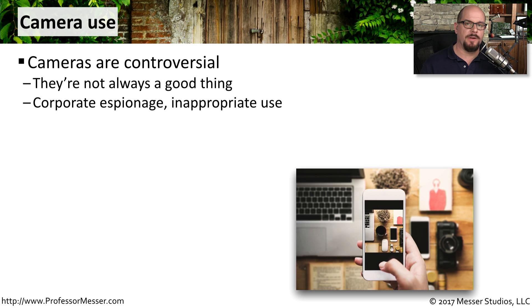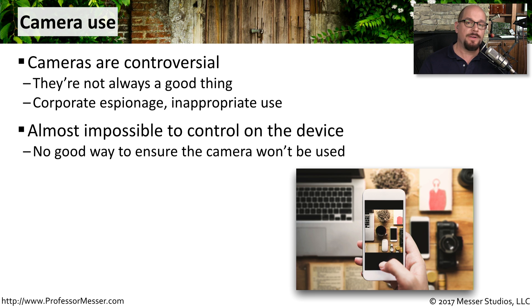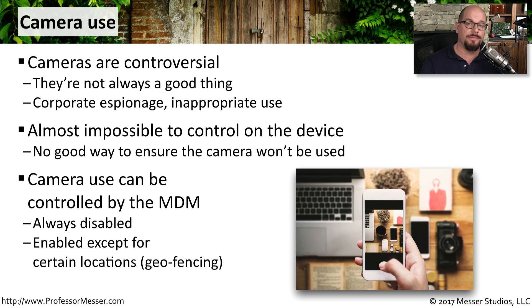Using cameras on mobile devices has become very popular, but it's not always appropriate for a corporate device. It's easy for someone to secretly use a camera to get information out of the organization, and cameras can be used for inappropriate purposes as well. That's why many security teams disable the camera in the mobile device manager, or only enable it outside the building using geofencing — allowing camera use away from work but limiting it inside the building.